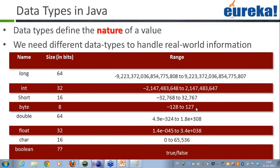Neha asked about the 'final' keyword. In C or C++ we had the 'const' keyword. In Java, we have the 'final' keyword for the same purpose. A final variable cannot have its value changed. A final method cannot be overridden. A final class cannot be subclassed.